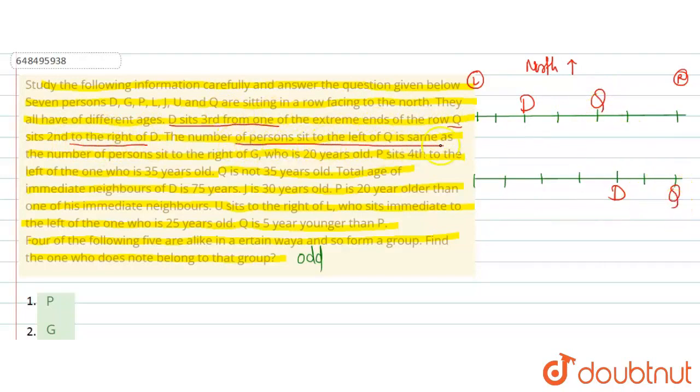Number of persons to left of Q is the same as the number of persons to right of G. Q ke left me 1, 2, 3, 4, 5 - that means G should be here. Then to his right there are 4 people. But here D is there, so this is wrong. In this case, Q ke left me 6 log hai, and G ke right me bhi 6 log hai. So this is correct.